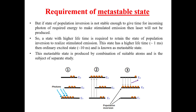A state with a higher lifetime is required to retain the state of population inversion and realize stimulated emission. This state has a higher lifetime of about 1 millisecond and is known as the metastable state. When photons hit electrons at the ground state, they excite to the excited state, and on the way back they encounter this metastable energy state. They stay here for about 10^(−3) seconds and population inversion is achieved between the metastable state and the ground state.